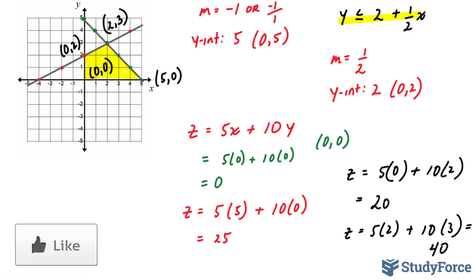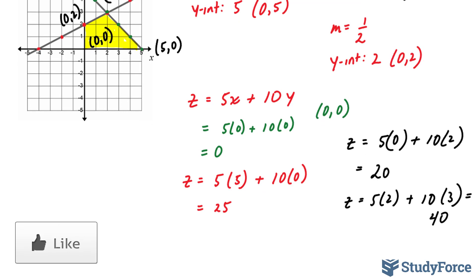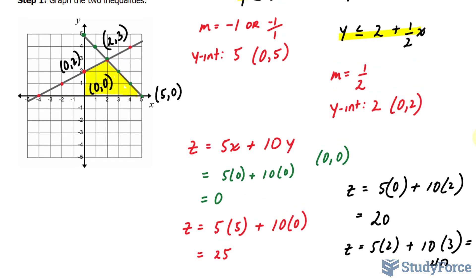Therefore, our function is maximized at the point 2 and 3. This point right here, the point of intersection. This is also referred to as the optimal solution.